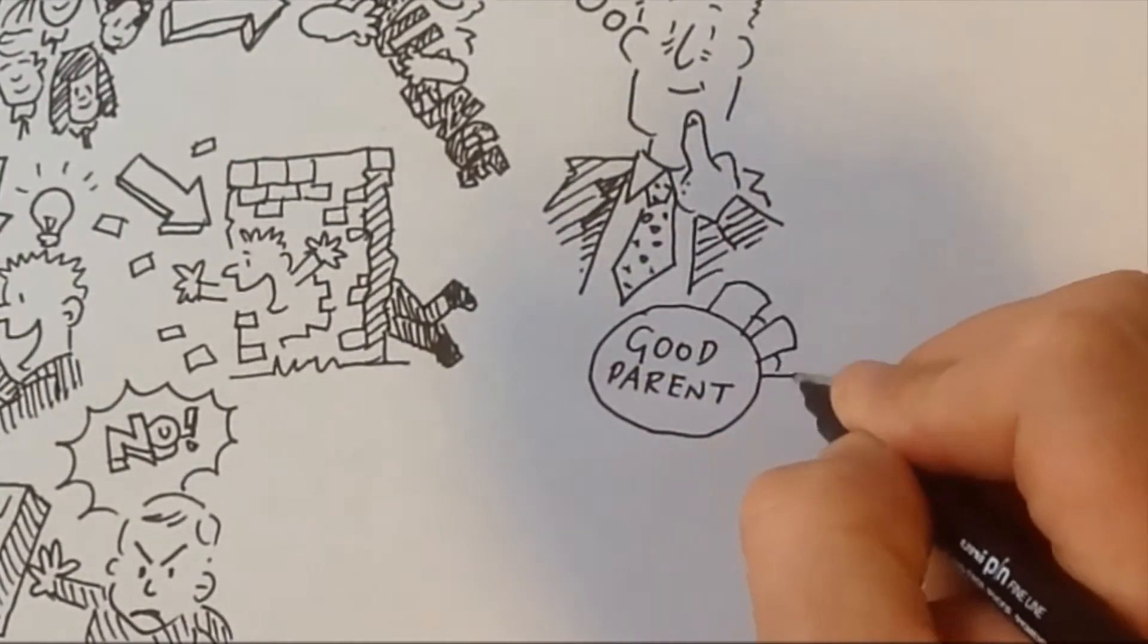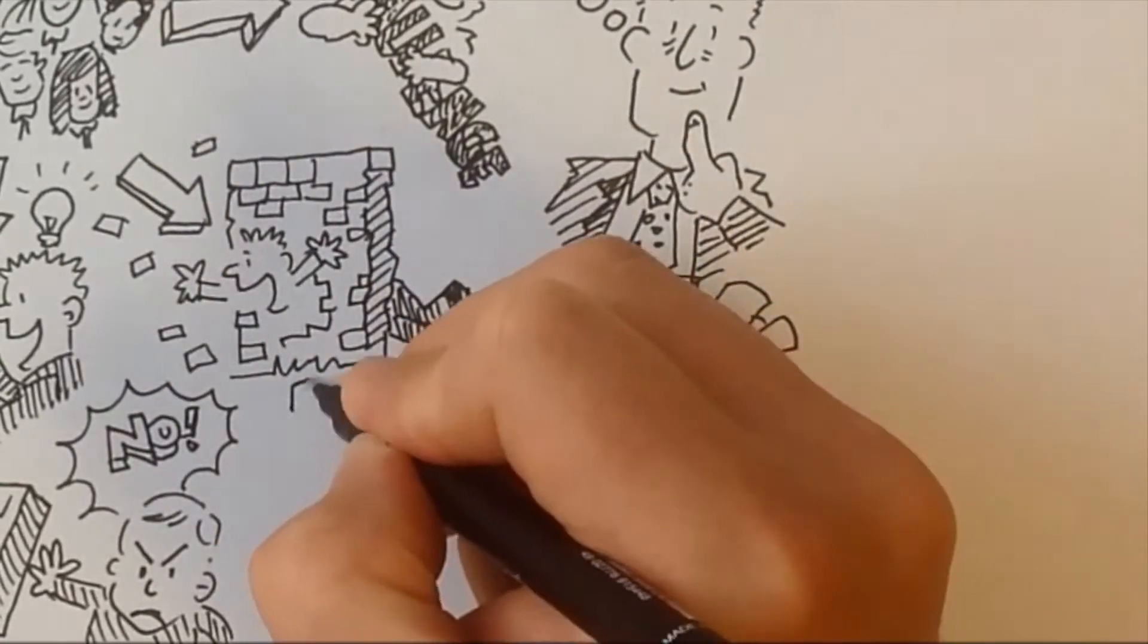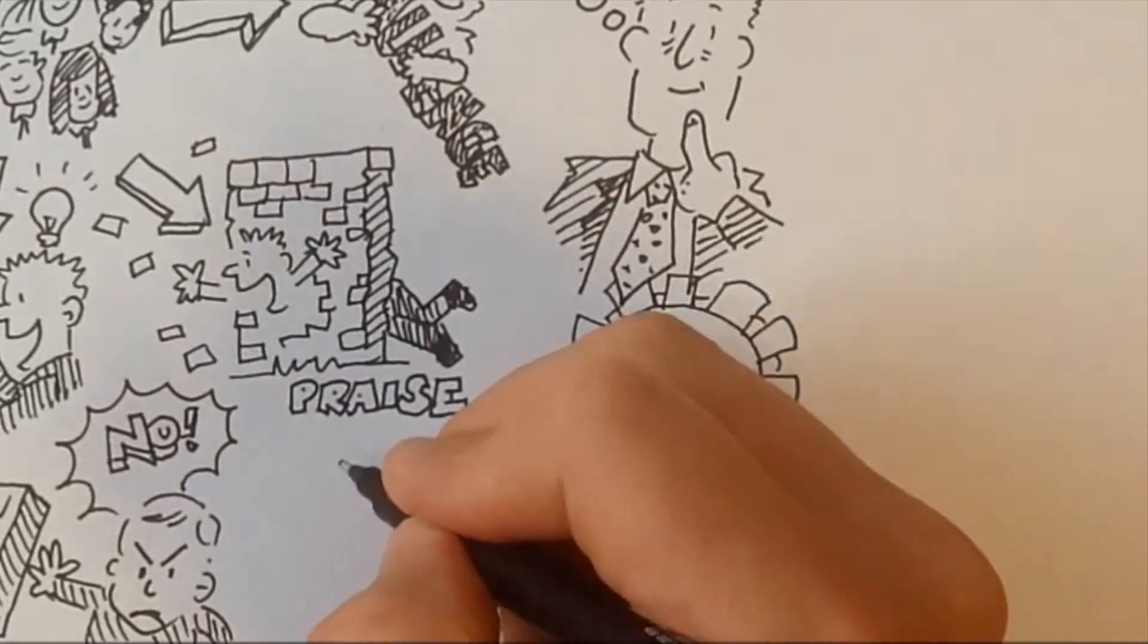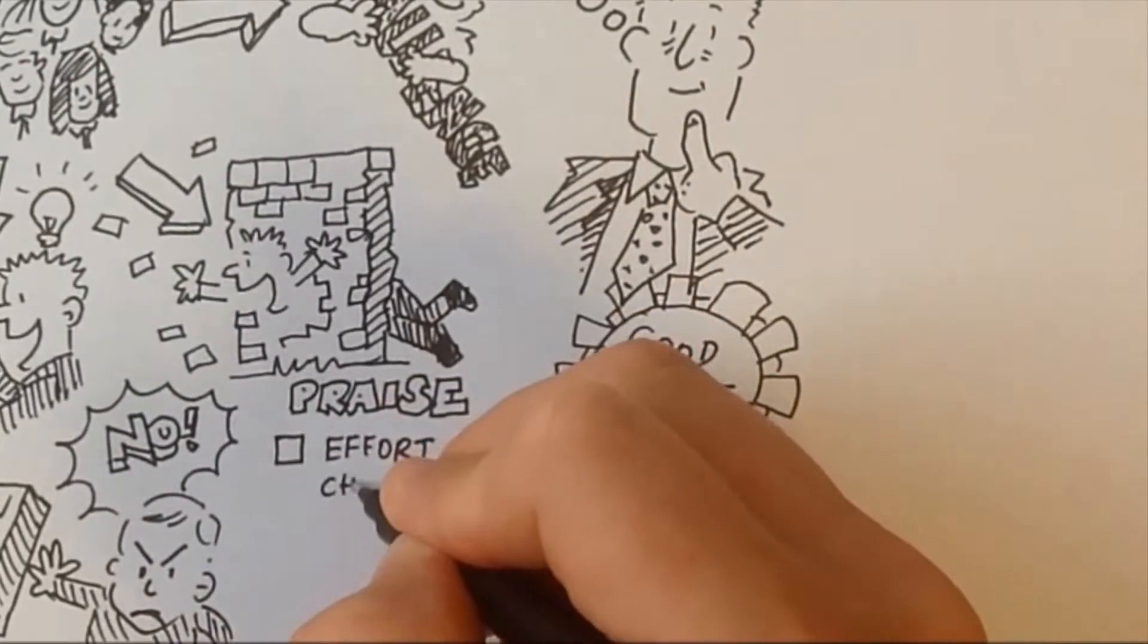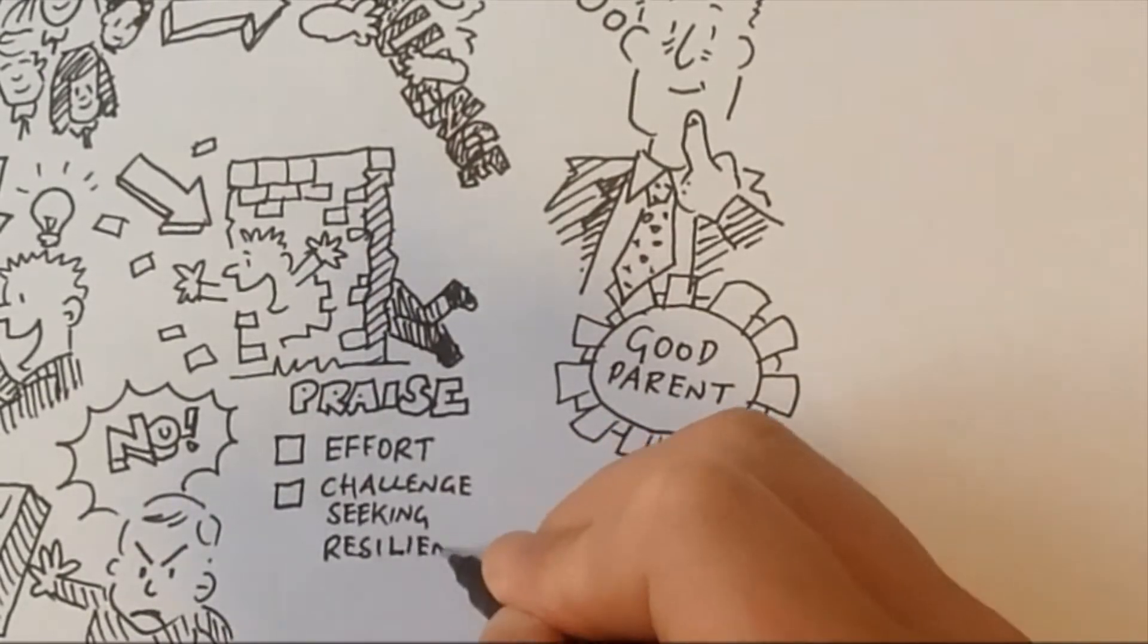So, parents, to help us in school to develop a growth mindset in your child, make sure you praise effort. Make sure you praise challenge seeking, optimism and resilience and developing good strategies for learning.